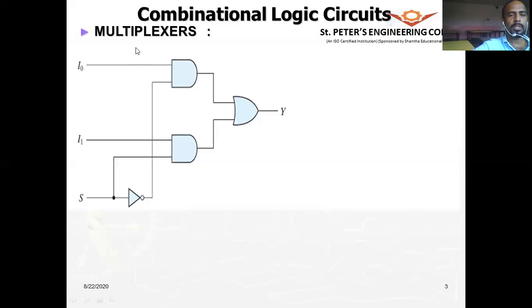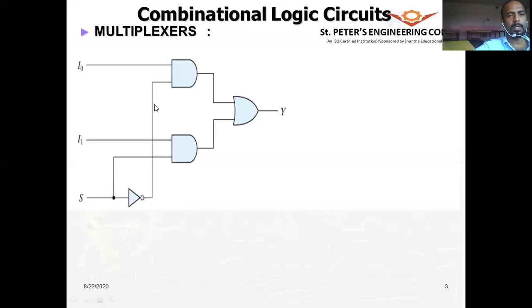For this reason, multiplexers are also called data selectors. The data is available at input I0 or I1, and the selector selects one of those inputs and presents it at the output. So data selector and multiplexer mean the same thing.